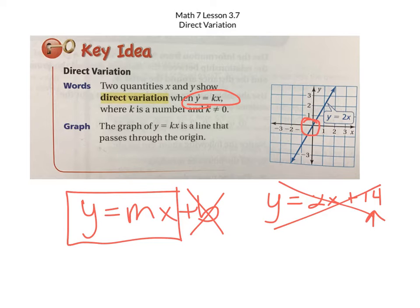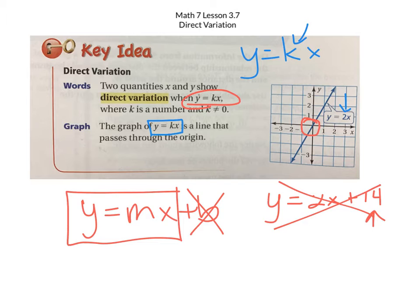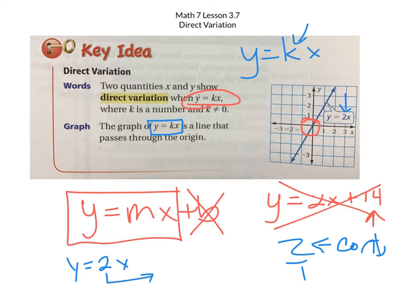When you are looking at a direct variation equation, y equals kx, that k is your slope, or you'll hear it called the rate of change. So in this case, what is my rate of change? Two. As I have two of one thing, I get one of another because my slope is technically 2 over 1. You'll also hear this called the constant of variation. Write that in your journals. In y equals 2x, that 2 is the constant of variation.